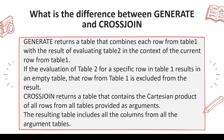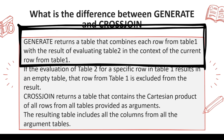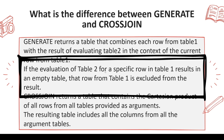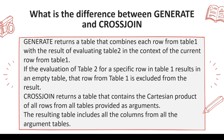Both are DAX functions. GENERATE returns a table that combines each row from table one with the result of evaluating table two in the context of the current row from table one. If the evaluation of table two for a specific row in table one results in an empty table, that row from table one is excluded from the result. So it can do a Cartesian product, but it can also filter based on the first table.